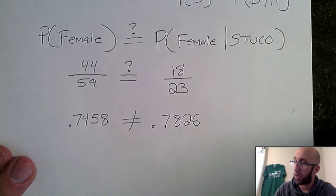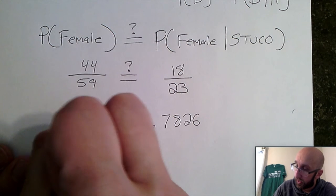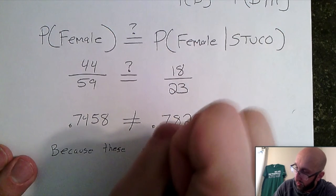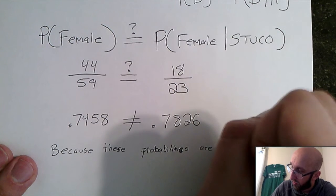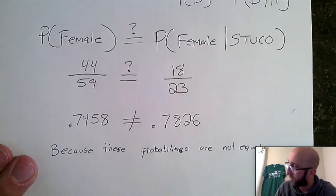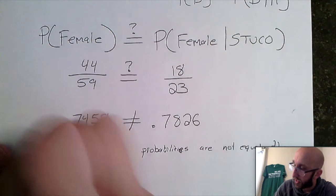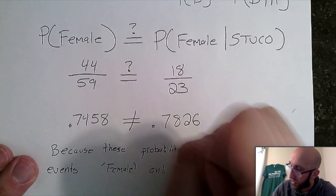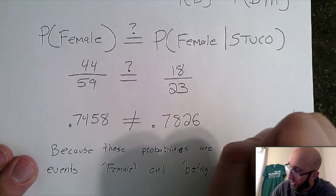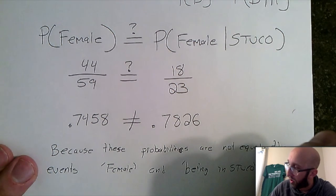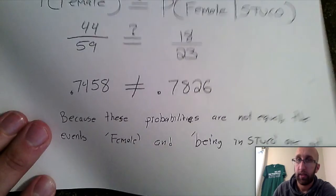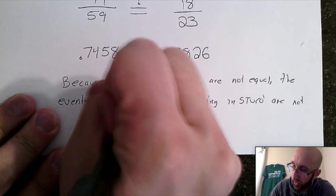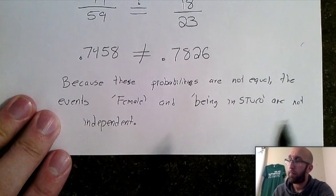So what we're going to do is we're going to say because these probabilities are not equal, the events female and being in STUCO are not independent.